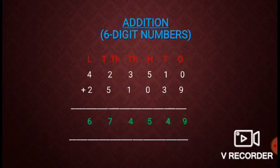Addition of 6-digit numbers. We have places: ones, tens, hundreds, thousands, ten thousands, and lakhs. First arrange the digits at the various places, then start adding from the ones place: 0 + 9 = 9, tens: 1 + 3 = 4, hundreds: 5 + 0 = 5, thousands: 3 + 1 = 4, ten thousands: 2 + 5 = 7, and lakhs place: 4 + 2 = 6. So the sum is 674,549.